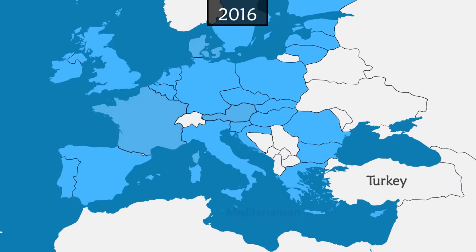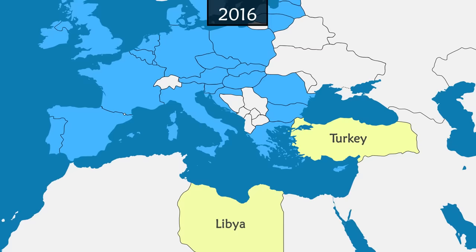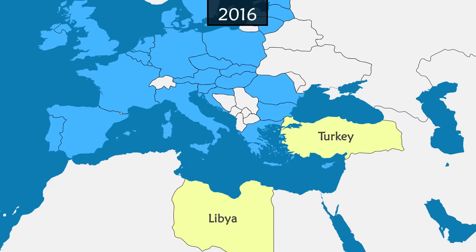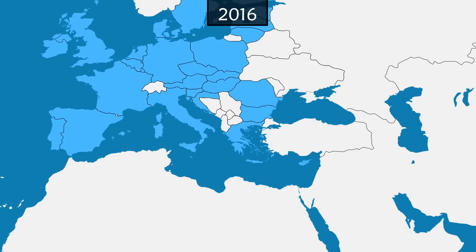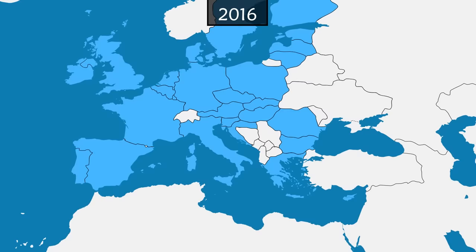In addition, the European Union signs agreements with Turkey and then with Libya, where the political situation is very unstable, so that they control and block the so-called illegal migration routes in exchange for financial aid. Migrant processing centres are funded mainly in Italy and Greece, where migrants find themselves awaiting regularisation in overcrowded conditions. The migration crisis divides European countries and fuels the rise of nationalist and Eurosceptic parties.